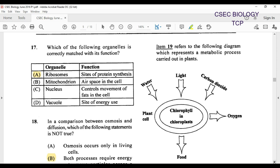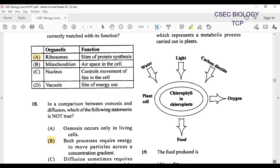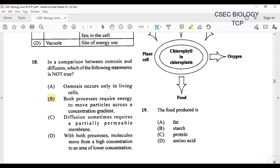Item 19 refers to the following diagram which represents a metabolic process carried out in plants. This is a question that would have been repeated several times. We're looking at water, light, carbon dioxide, plant, chlorophyll, chloroplast, oxygen given off, and food. This suggests that we're talking about photosynthesis. The food produced is, is it fat? No, not really. Starch, protein, amino acid. We're going to go with B, starch.